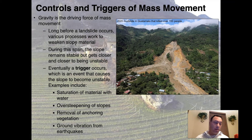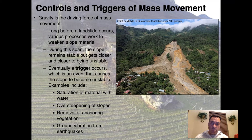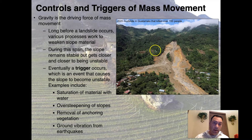Long before a landslide occurs, various processes work to weaken slope material — removal of vegetation, destruction of minerals through weathering, and so on. During this span the slope remains stable but gets closer and closer to being unstable. It can hang out there for a very long time as a stable shoulder slope on a mountain, and then one day it isn't stable enough. Eventually a trigger occurs — an event that causes the slope to become unstable.